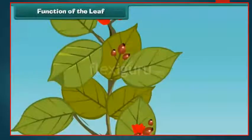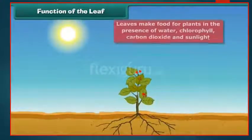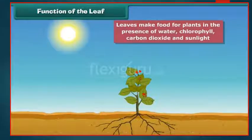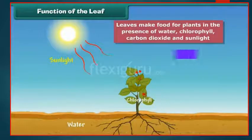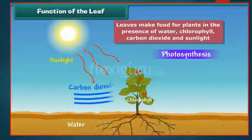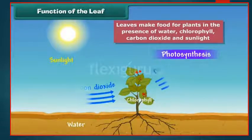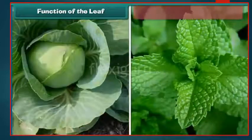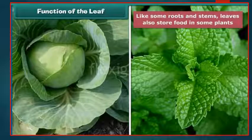The main function of a leaf is to make food for the plant. For making food, leaves use water, chlorophyll, carbon dioxide and sunlight. This process of making food is called photosynthesis. In this process, oxygen is released. All living things require oxygen for breathing. Some plants like cabbage and mint store food in their leaves, and we eat these leaves to get nutrition.